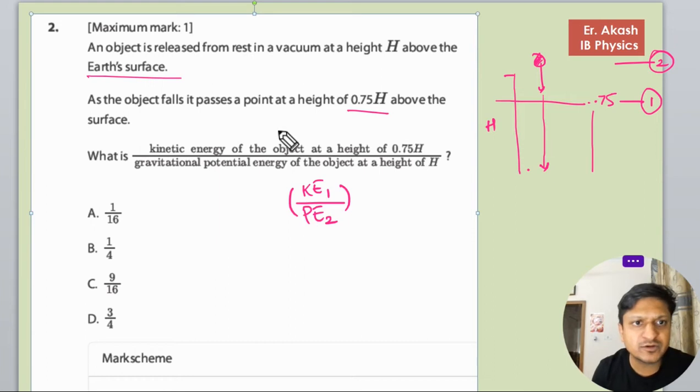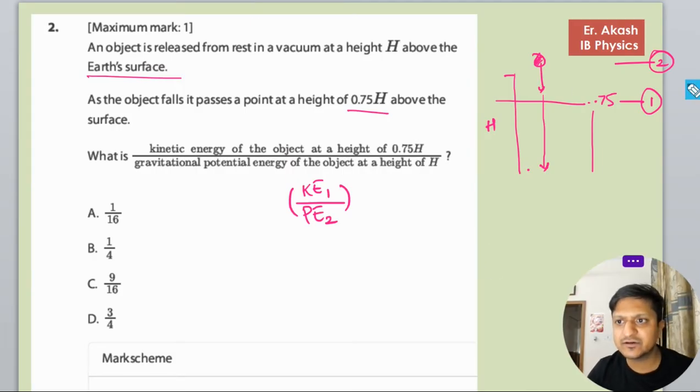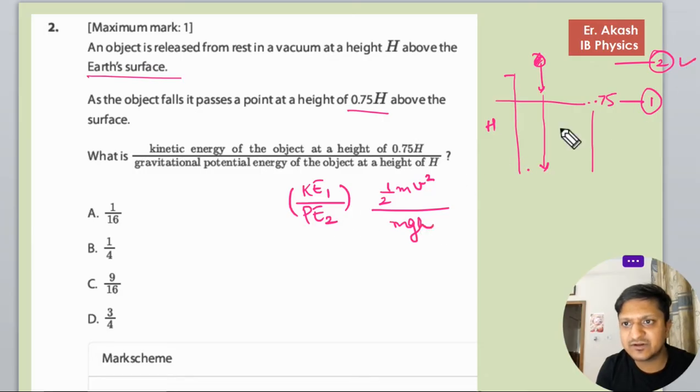So how we will use the equations? We have to use the potential energy there. So KE is half m v squared and potential energy is m g h. Potential energy is at this level.